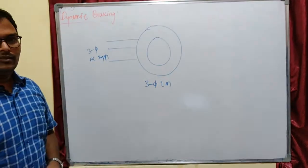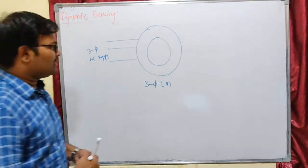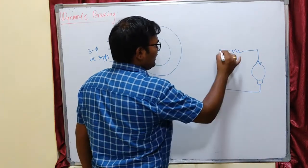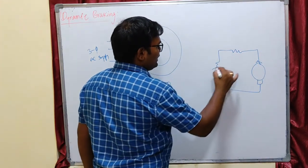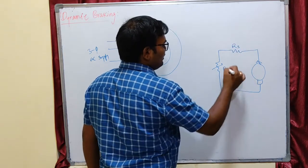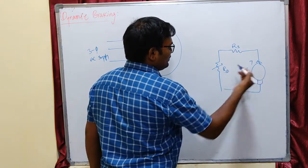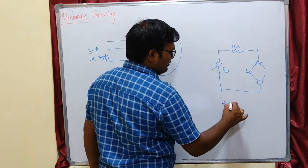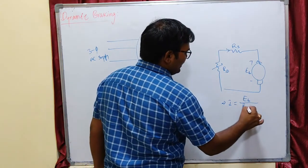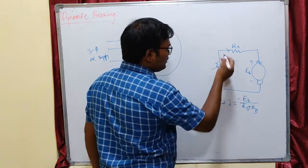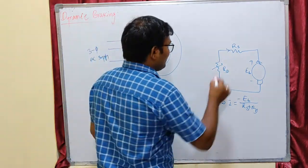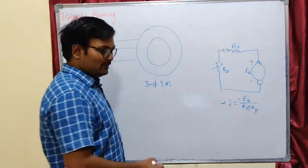Let us see dynamic braking. In case of DC machines, we were just disconnecting the supply and adding a dynamic resistance. That will make our back EMF a source, so current I equals Eb divided by Rs plus Rd. This current is in the opposite direction to our initial current direction.